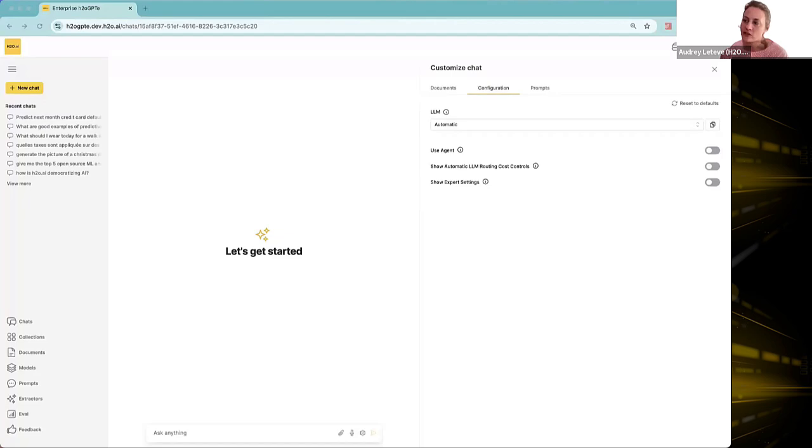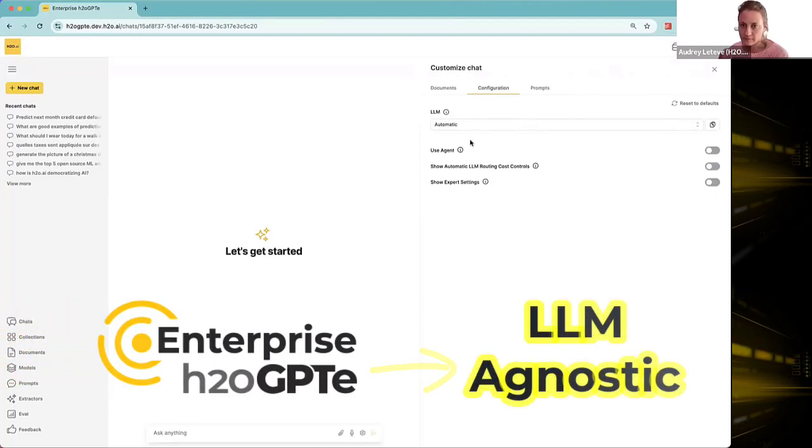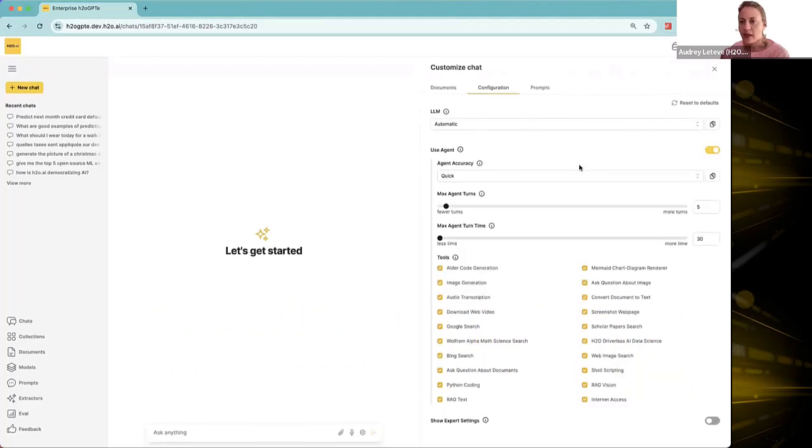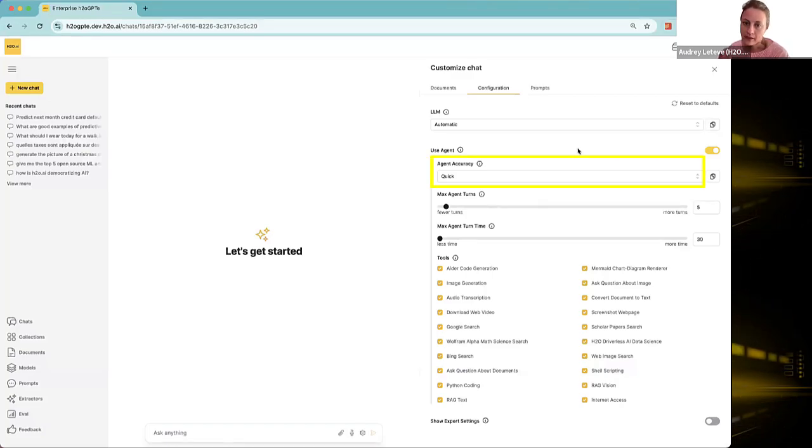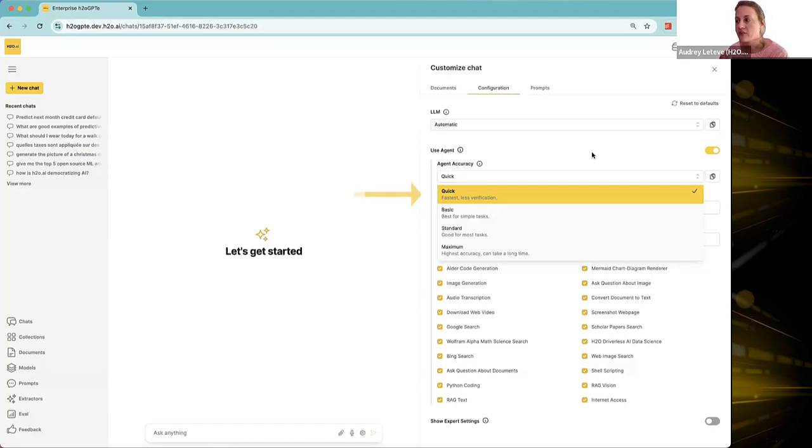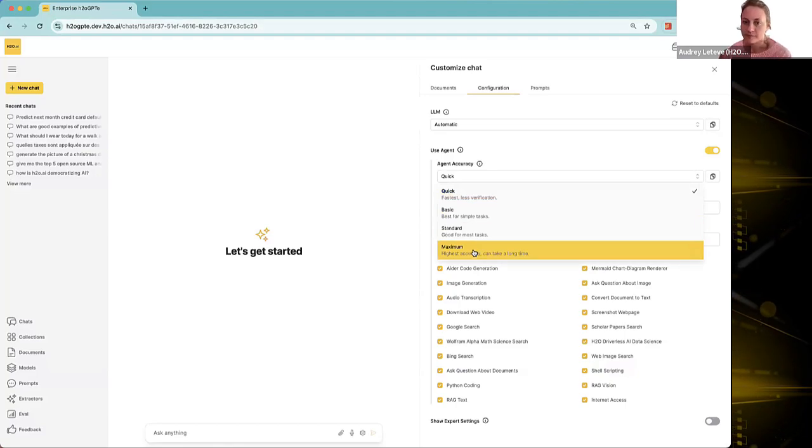Let's now get started with Enterprise H2O GPT agents. First, I have started a new chat and I'm going to customize the chat. I've clicked here. The settings I can see straight away are LLM. I can choose which LLM I'd like to use, Enterprise H2O GPT being LLM agnostic. I'm going to select Use Agent. Here I have a few settings available to me. First, I can specify the accuracy for the agent response. I can get a quick and fast answer, but maybe less verification will be done and it will be a less accurate answer potentially. Or I can have this to the maximum level leading to higher accuracy but higher running time. Let's leave it as is.